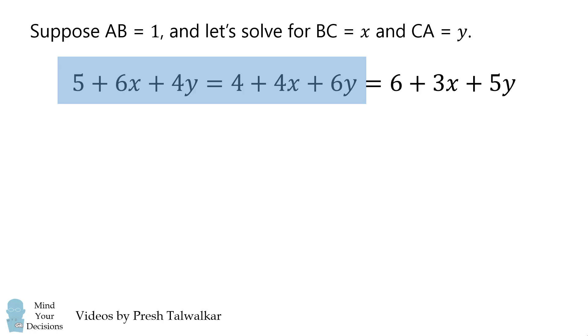We'll first consider the first two equations. We can move the x terms to the left, the y terms to the right, and we end up that 1 plus 2x is equal to 2y. This simplifies to be 1 half plus x is equal to y.